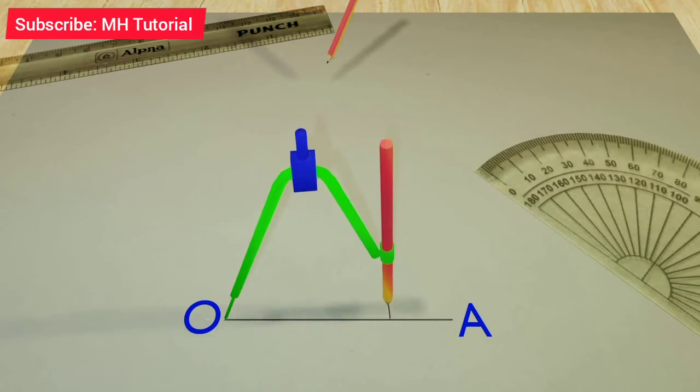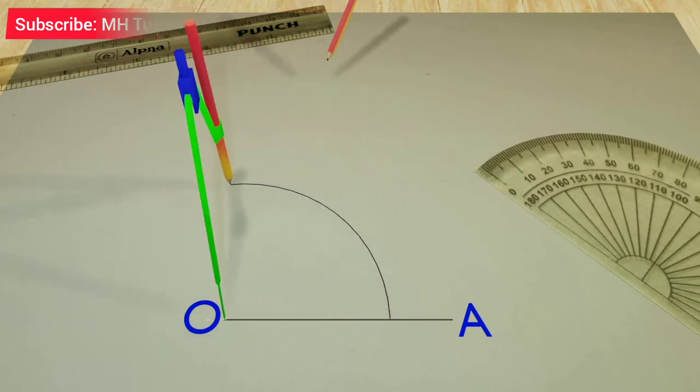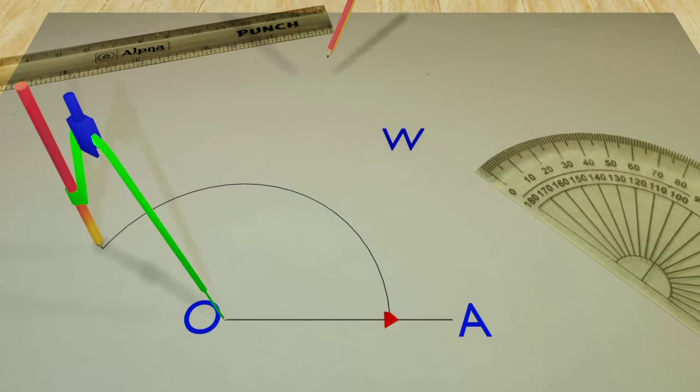A circle arc is drawn while keeping its tip at point O. This circle arc intersects the straight line OA at point W.